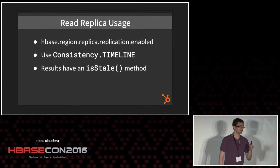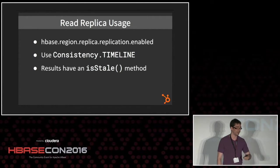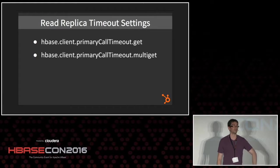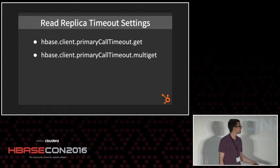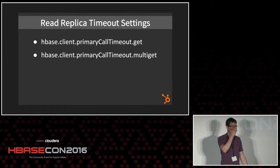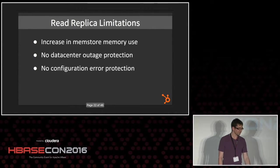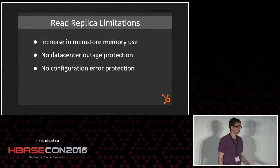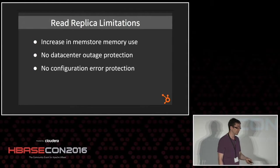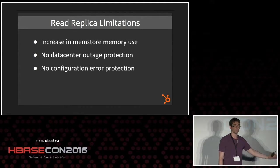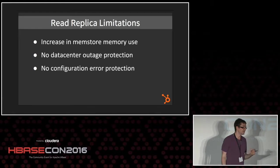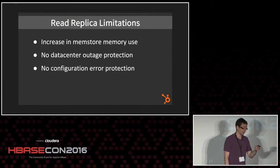Also worth knowing: in your table schema you have to specify how many replicas you want at the column family level. However, read replicas didn't fully solve all the problems we were having. They do increase mem store usage by a multiple of however many replicas you have. It's all within one data center, so if that data center goes down you're not getting any resiliency. And if you push out a bad configuration, there's no easy rollback without a rolling restart.